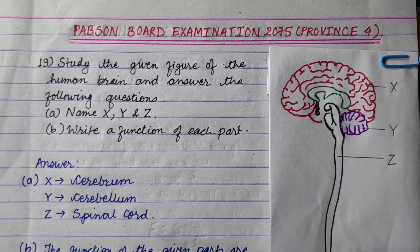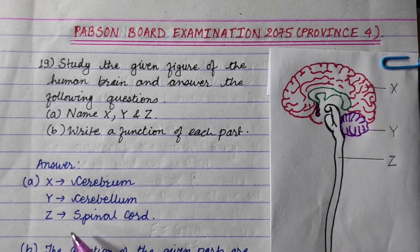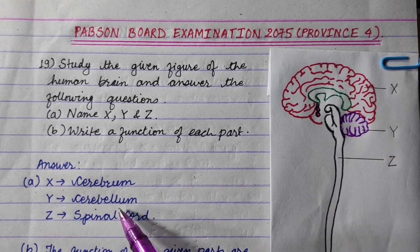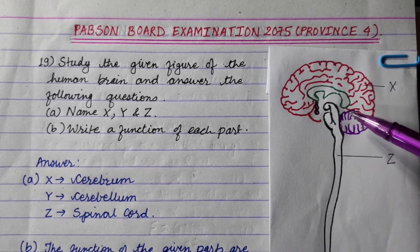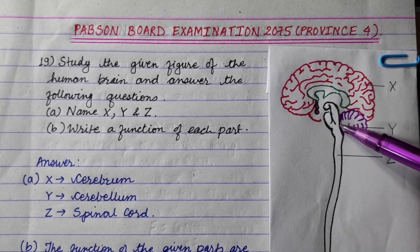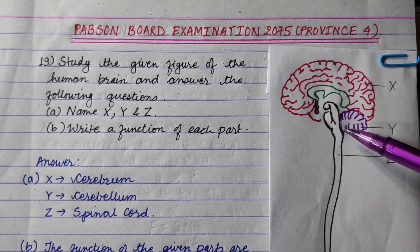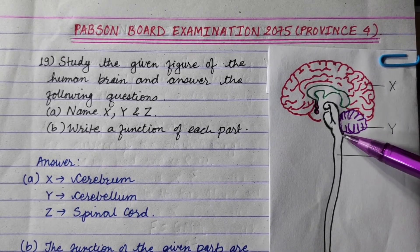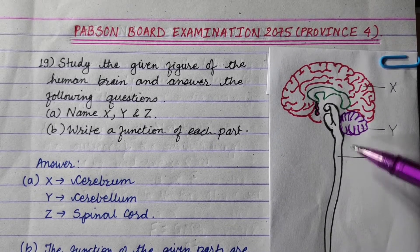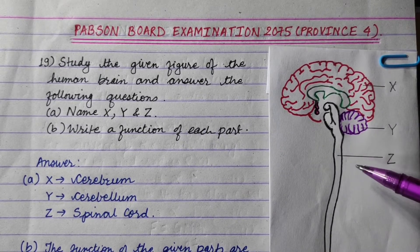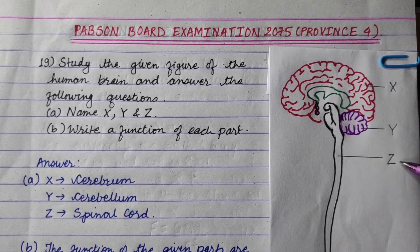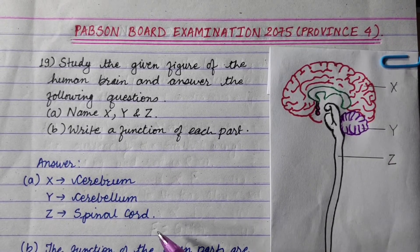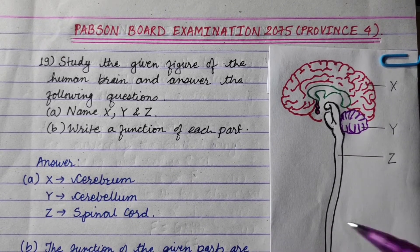Then we have Y. This is the midbrain region. And Z — this is the continuation of the brainstem connecting to the spinal cord.